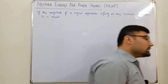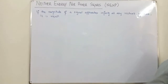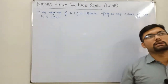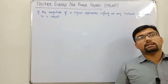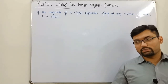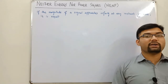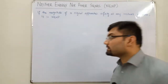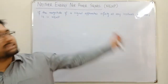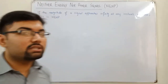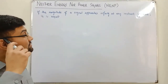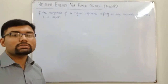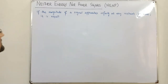You can do the calculations: if the energy is finite, it is an energy signal; if the power is finite, it is a power signal. But if neither the energy nor the power is finite, then the signal is neither energy nor power. A quick way to identify it: if the amplitude is approaching infinity at any instant, it is a neither energy nor power signal.